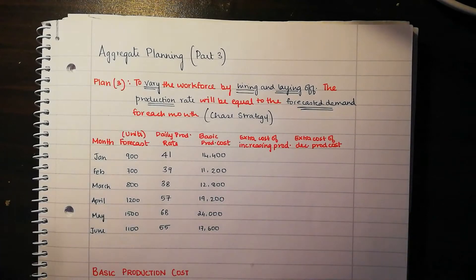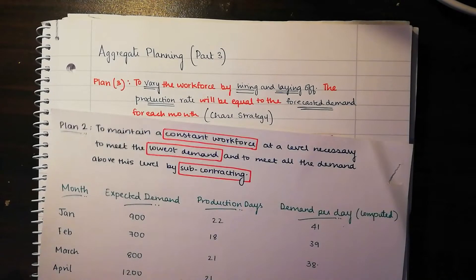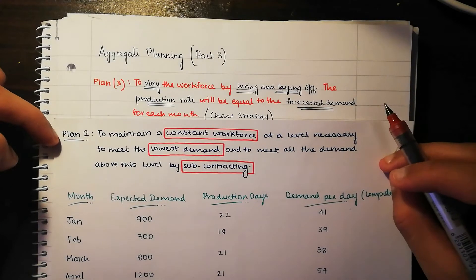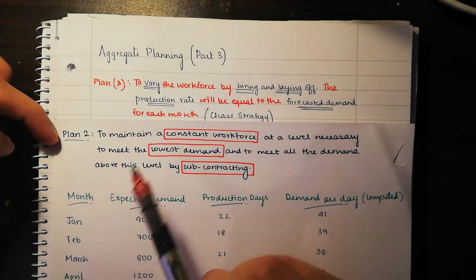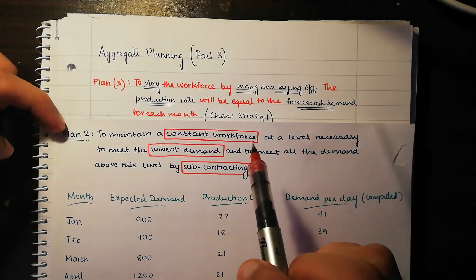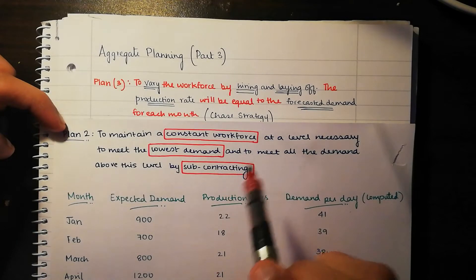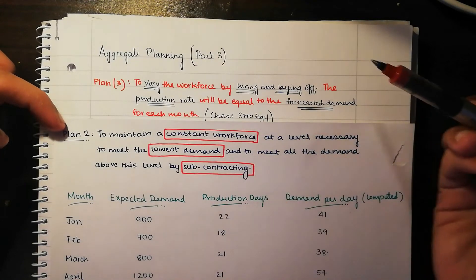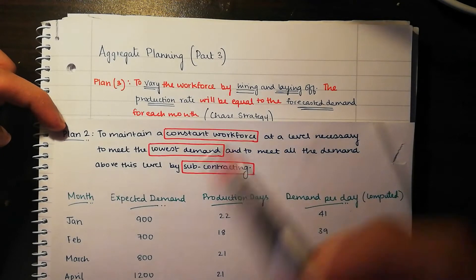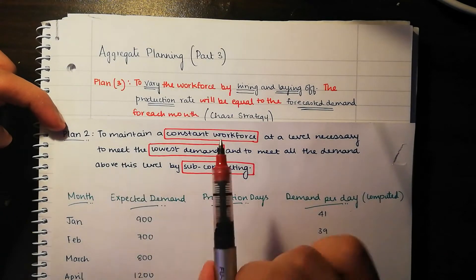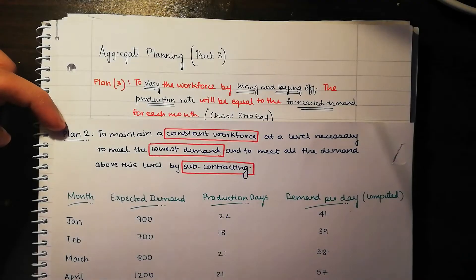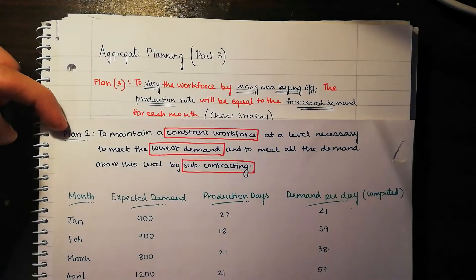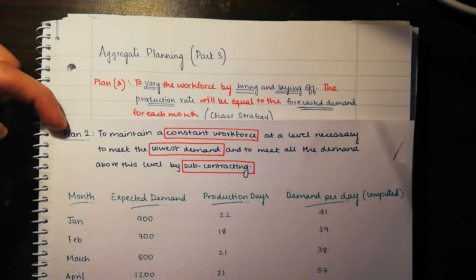To understand this more clearly let's compare this to plan 2 and how it's different. In plan 2, they wanted to maintain a constant workforce at a level necessary to meet the lowest demand and to meet all the demand above this level by subcontracting. In plan 3, a striking difference is that instead of maintaining a constant workforce, we want to vary the workforce by hiring and laying off. We do that by comparing the production rate and forecasted demand and making sure that they are equal.